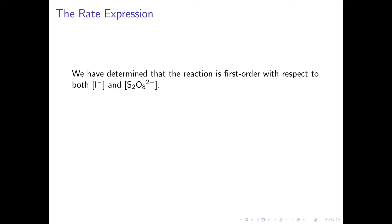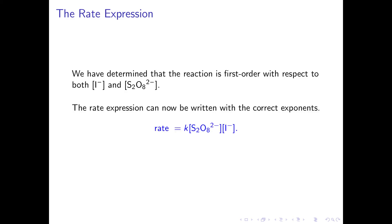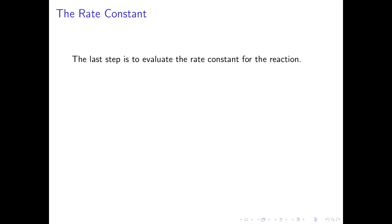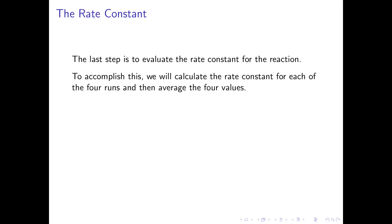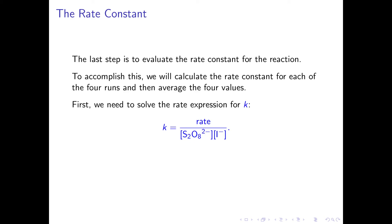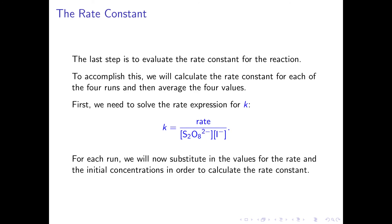We have now determined that the reaction is first order with respect to both iodide ion and peroxydisulfate ion. The rate expression can now be written as: rate = k[S2O8^2-][I^-]. The last step is to evaluate the rate constant. We will calculate k for each of the four runs and then average the four values, by solving: k = rate / ([S2O8^2-] × [I^-]).